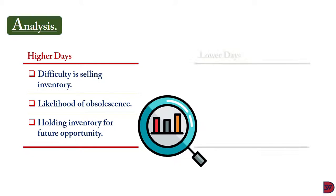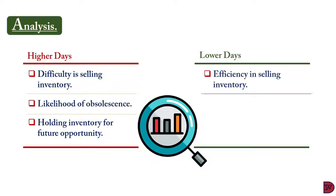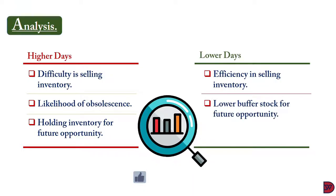When the comparison is done and the ratio is lower, it could mean that the business is efficient in selling its inventory. However, if business management wants to achieve a lower inventory days figure, they can sell more than the quota given on credit to achieve a favorable ratio — so investigation has to be done. We shouldn't jump to conclusions. It can also mean that the business has lower buffer stock for future opportunities.